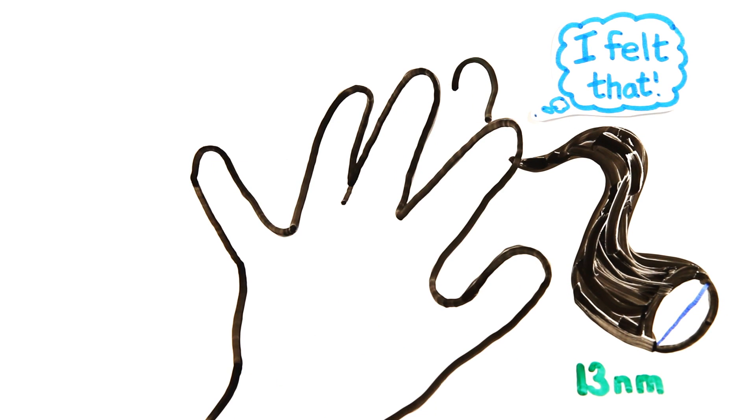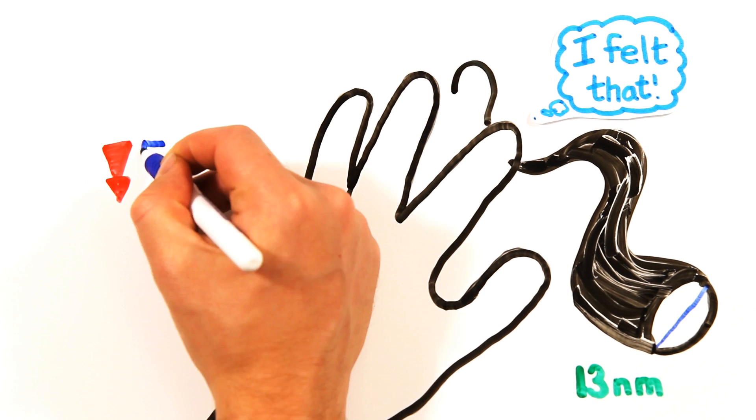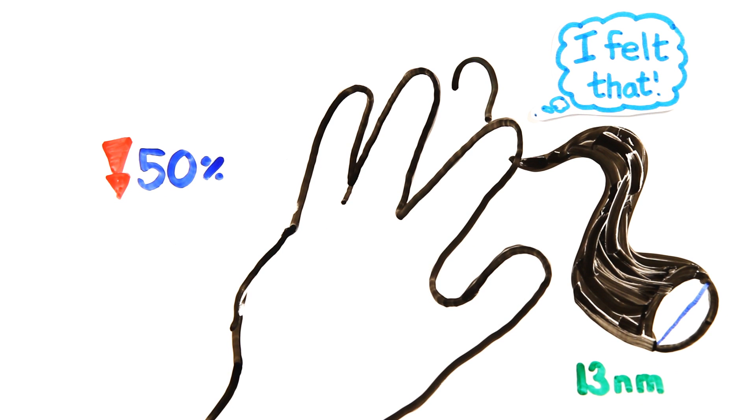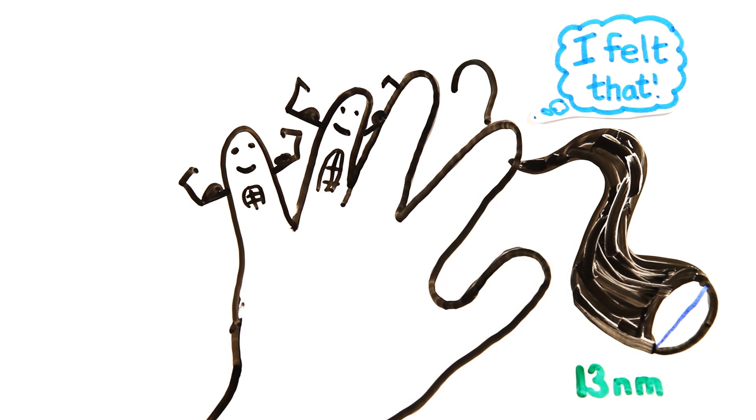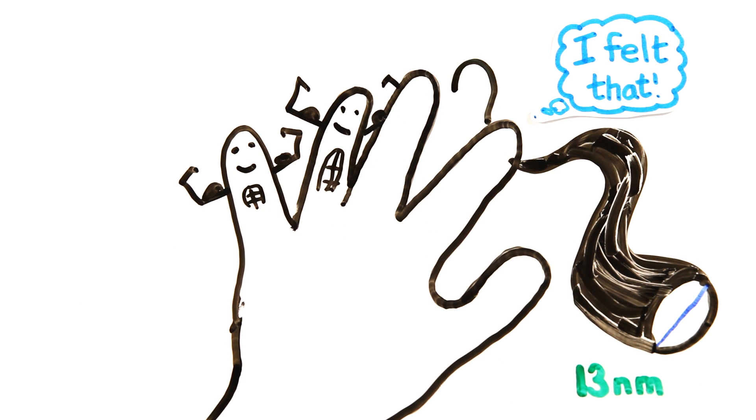And while you may not think much of your pinky finger, without it, you'd lose 50% of your hand's strength. Sure, the index and middle finger are essential to help pinch and grab with the thumb, but it's your ring and pinky finger that give your hand power.